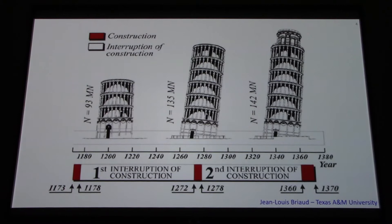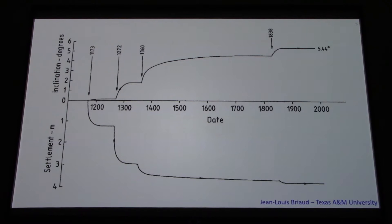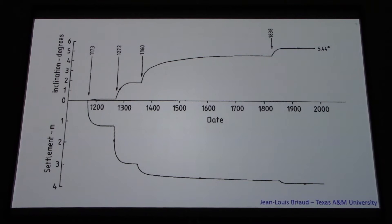Here's the inclination as a function of time. The top part shows inclination versus time, and the bottom part shows settlement versus time. During the first period of construction it went down about one meter; during the second portion, an additional 1.5 meters. Over that almost 1,000-year period, the structure has settled close to four meters, which is a very significant amount of settlement we certainly wouldn't tolerate in any current design. The tilt reached about 5.5 degrees.